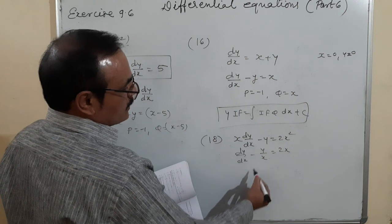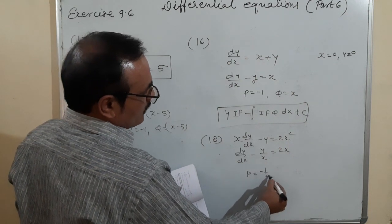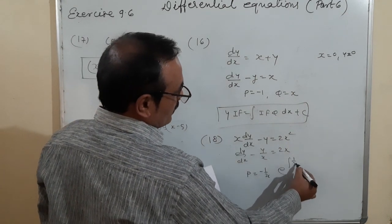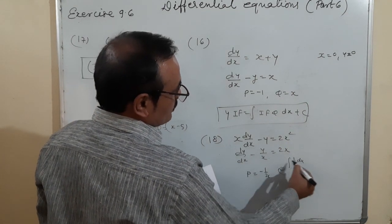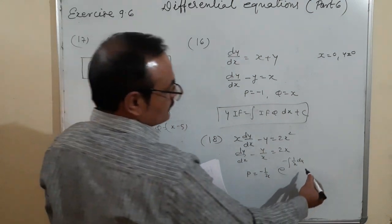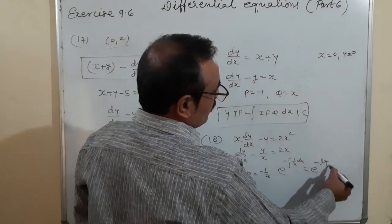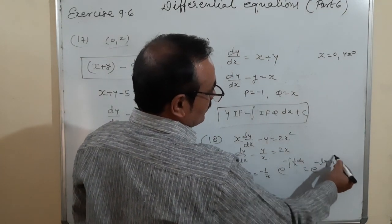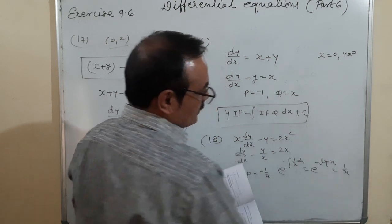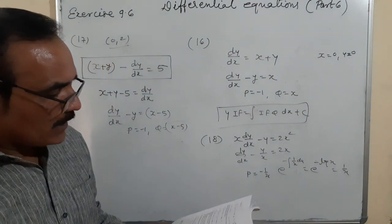For the MCQ questions: Question 18 asks for the integrating factor of x dy/dx - y = 2x². Dividing by x: dy/dx - y/x = 2x. So P = -1/x, and the integrating factor is e^(∫-1/x dx) = e^(-log x) = 1/x. Remember it is 1/x, not x, because of the negative sign.